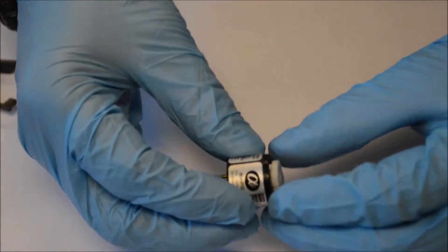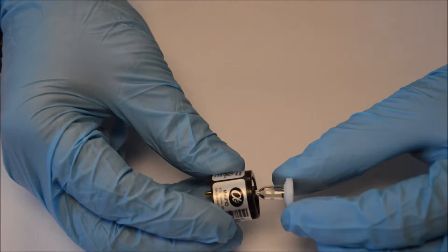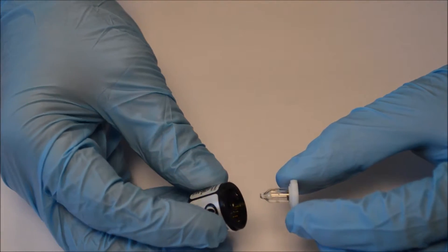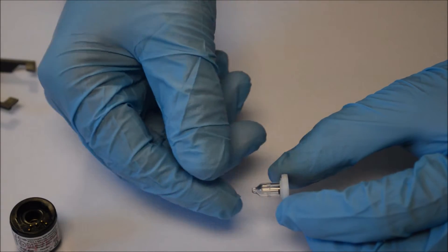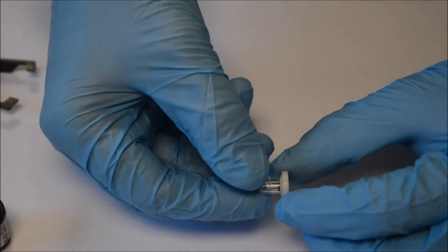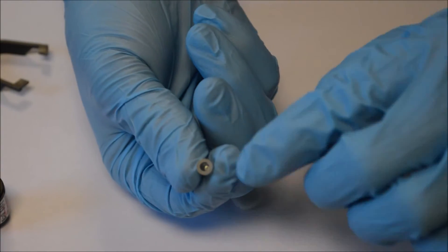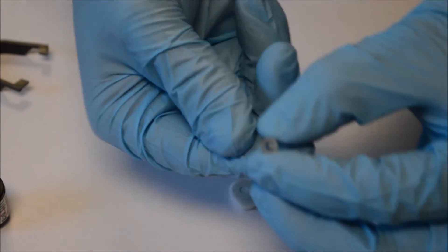From there we then will remove the electrode stack and the lamp. This little section is the lamp and what we need to do now is we need to clean the lamp window which is this surface which is what the contaminants can build up on.